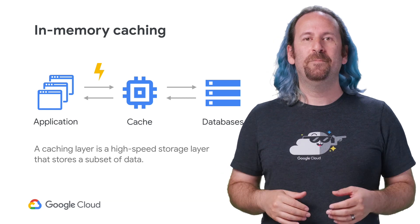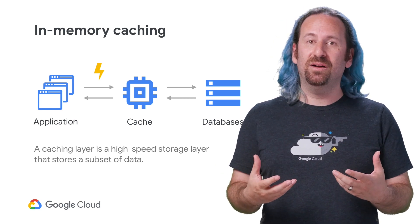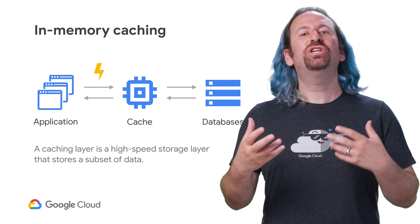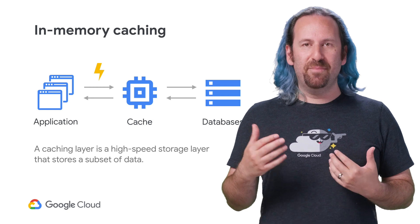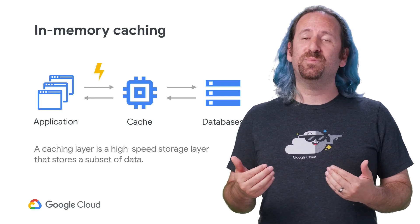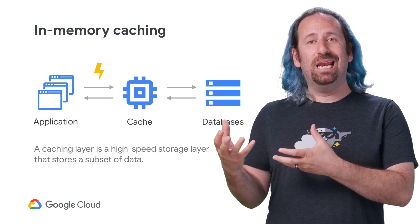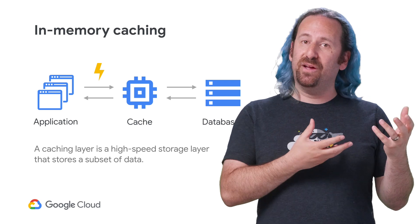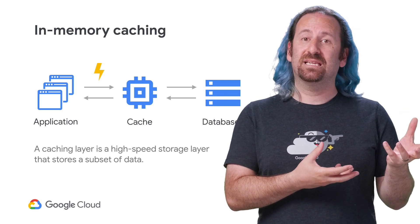it'll never succeed. In-memory caching is a common pattern you see to achieve the performance that you need. In-memory caching helps reduce latency and cost by taking frequently accessed data and retrieving it from memory when possible, rather than disk.